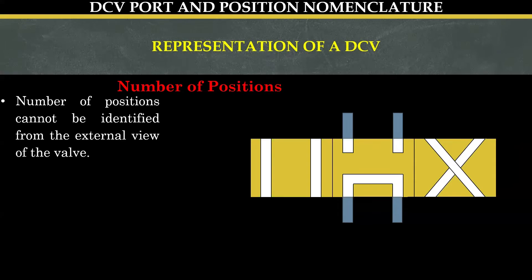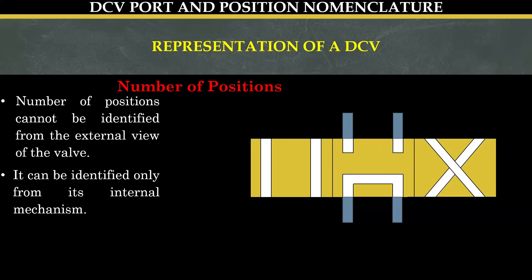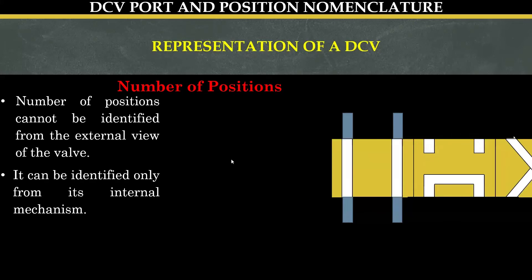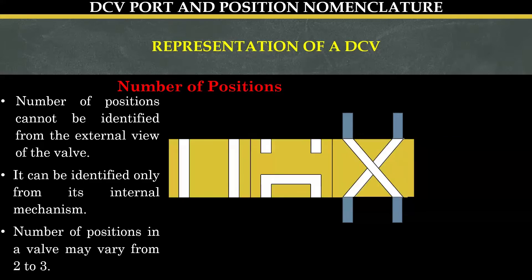Now, number of positions. Number of positions cannot be identified from the external view of the valve. It can be identified only from its internal mechanism. As displayed in the figure, there are three positions represented by three squares: the first position, the second position, and the third position. Number of positions in a valve may vary from two to three.